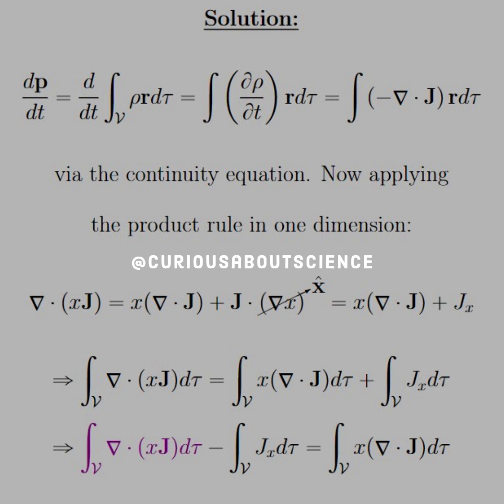And we note that the second term in the product rule is what we have in the integral, so we'll have to do some maneuvering. But let's note that the gradient of x just goes to x hat. So that when dotted with J goes to the x component of J. And we're left with x times the divergence of J.